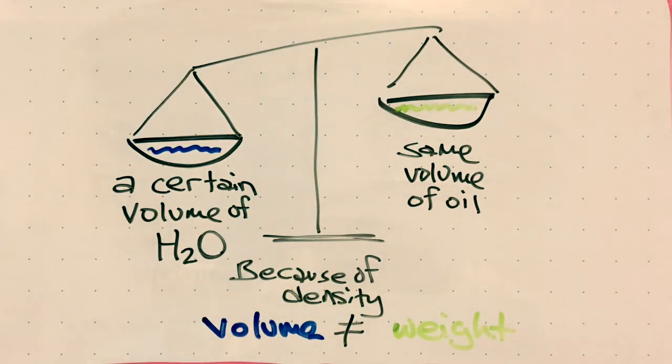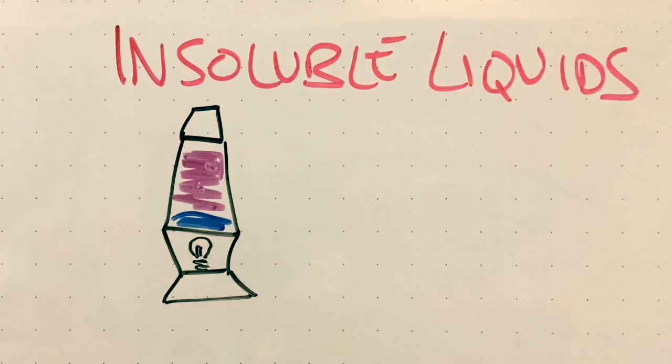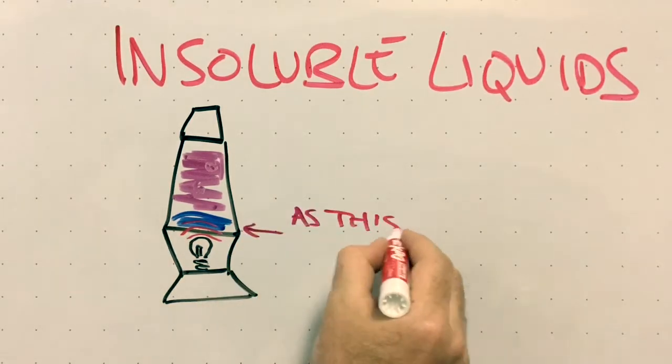In that lamp, the two liquids are very close in density, but one is heavier, so it sits at the bottom. When the lamp is turned on, the bulb under the liquid compartment warms the heavy liquid, expanding it and making it less dense.